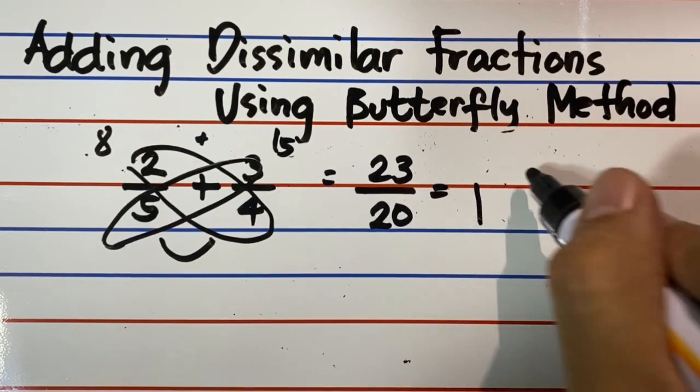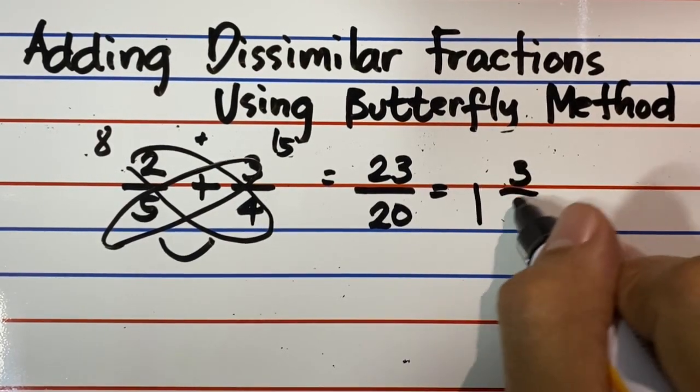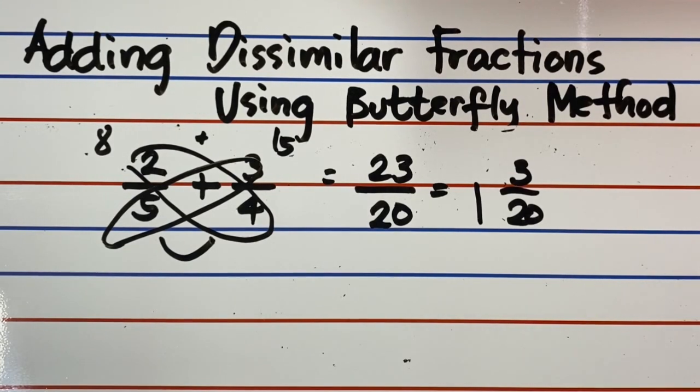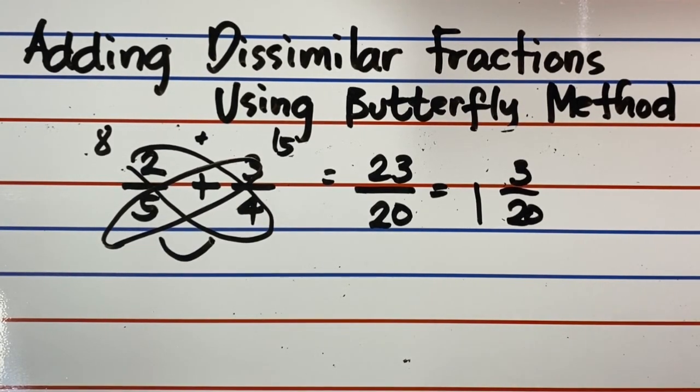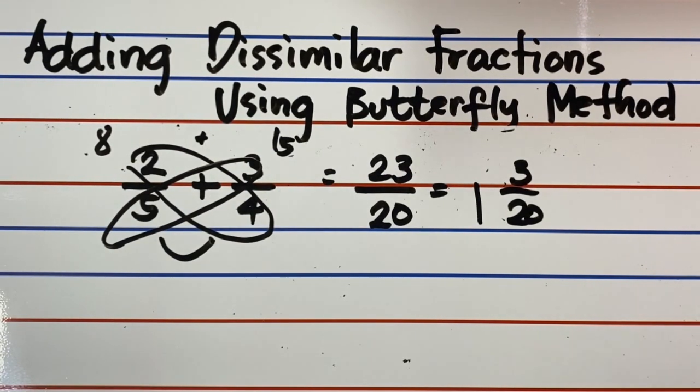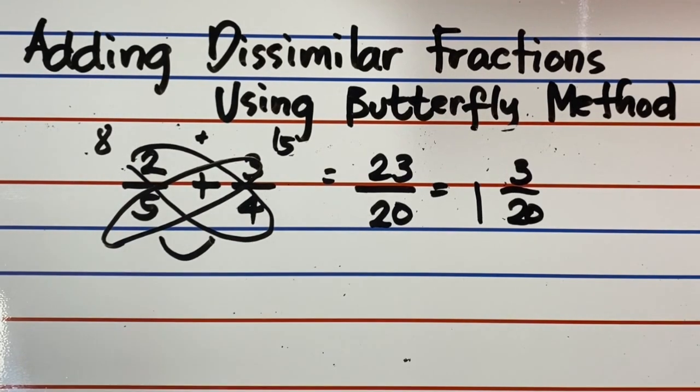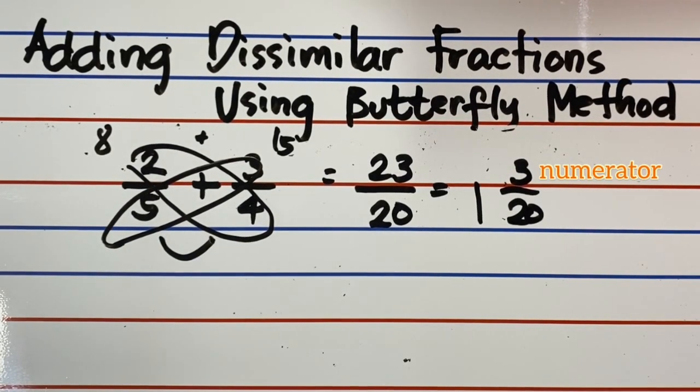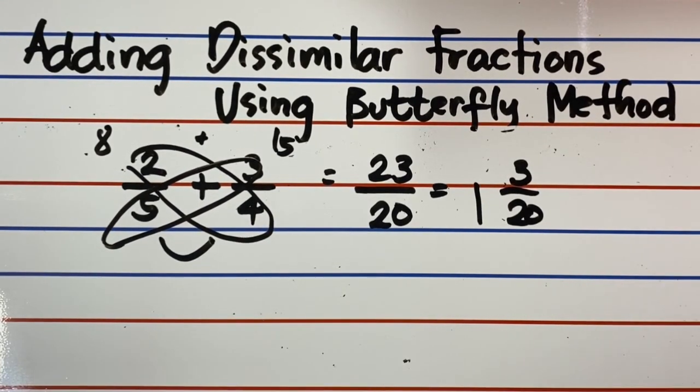Since it is an improper fraction, change it to a mixed number. How? Follow step number 6. 23 divided by 20. The quotient is 1 that becomes the whole number. The remainder is 3 that becomes your numerator. And the divisor 20 becomes the denominator. The answer is 1 and 3 over 20.